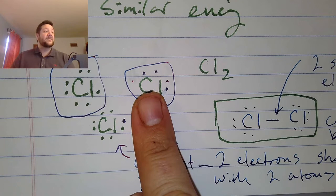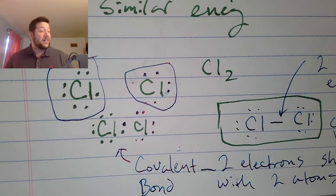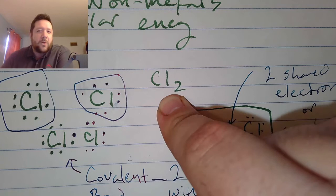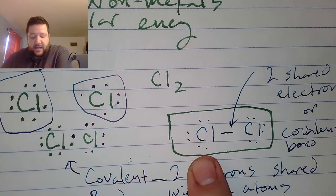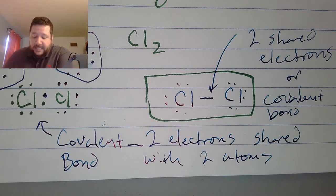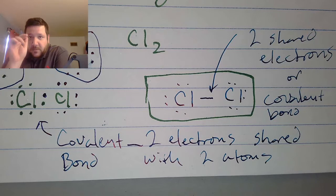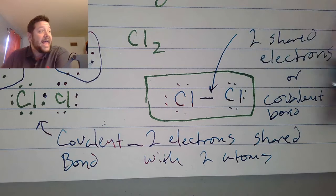If you zoom in, this chlorine now has eight valence electrons counting the one shared green electron and all the blue ones around it. On the other side, that chlorine also has eight. As long as they each share one electron with the other, we get eight valence electrons each, which is really stable because it has a full outer shell — the valence shell. That connection of the two shared electrons holding them together is called a covalent bond.